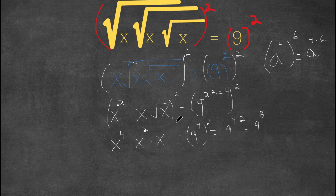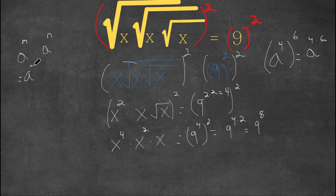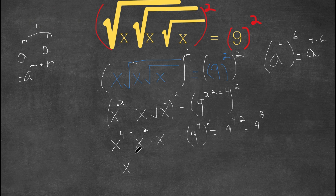Now what we're going to do is simplify this a little bit. x to the power of 4 times x squared — when we have a to the power of m times a to the power of n, this is equal to a to the power of m plus n, so we simply add the exponents. So we add 4 plus 2, which is 6, giving us x to the power of 6. Times x, and x is the same thing as x to the power of 1, so 6 plus 1 is 7, giving us x to the power of 7. And this still equals 9 to the power of 8.